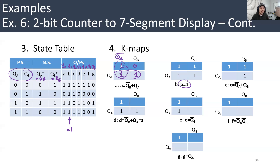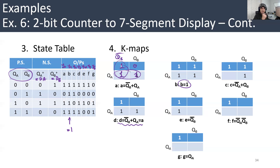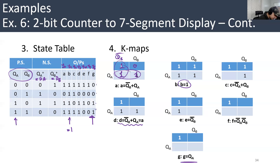Interestingly, D is just equal to A — you just connect them together. And G is equal to QA. Look at G and look at QA: 0, 0, 1, 1 — they match.